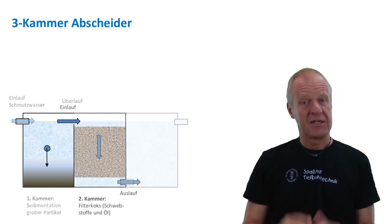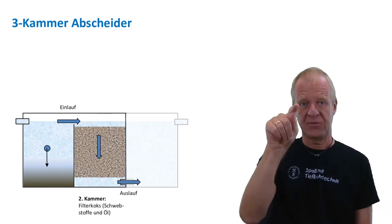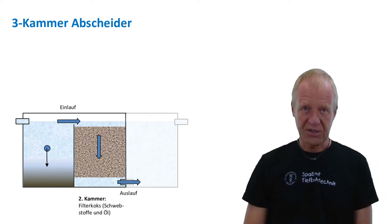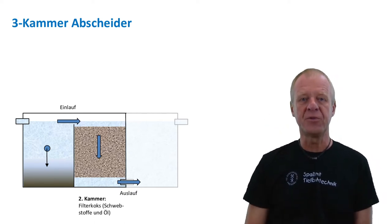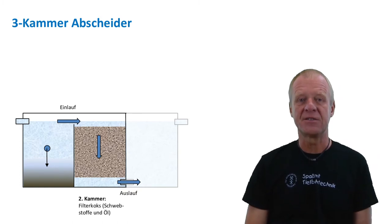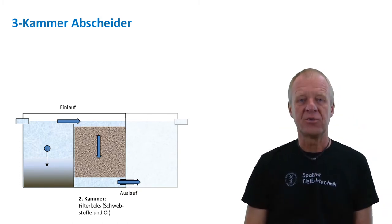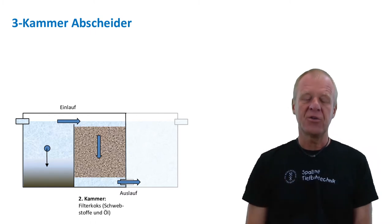The liquid then moves into the second chamber from the top and leaves at the bottom. Everything lighter than water such as oil or grease will stay at the top of the chamber as those components will tend to float on top of the water and will not flow downwards to the bottom.